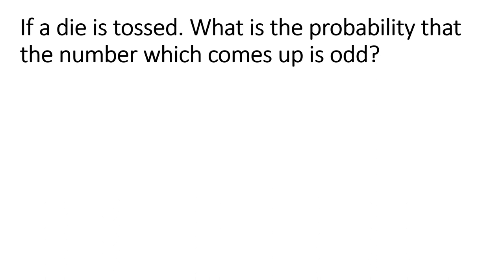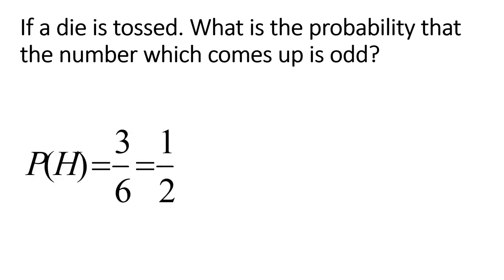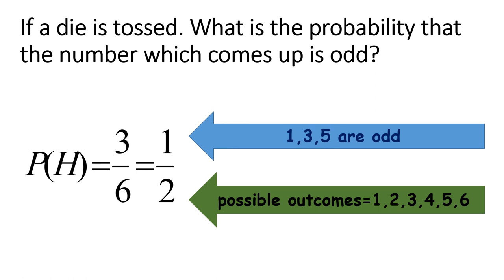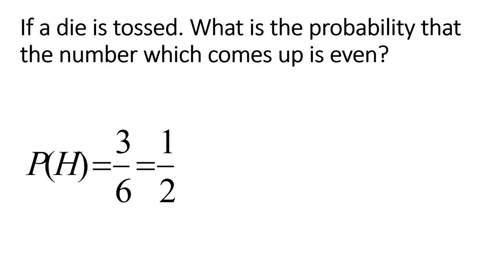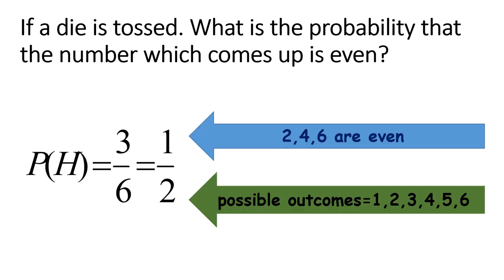If a die is tossed, what's the probability that the number which comes up is odd? The odd numbers on a die are 1, 3, and 5 — that's 3 outcomes. The total possible outcomes are 6. So 3 over 6, reduced to 1 half. If a die is tossed, what's the probability the number is even? The even numbers are 2, 4, and 6 — also 3 outcomes out of 6. So it's also 3 over 6 or 1 half.